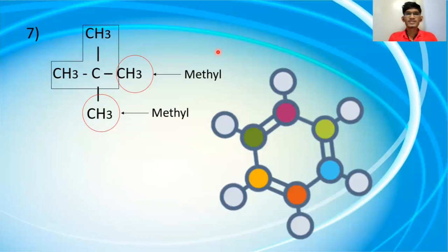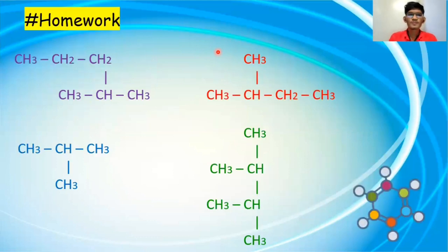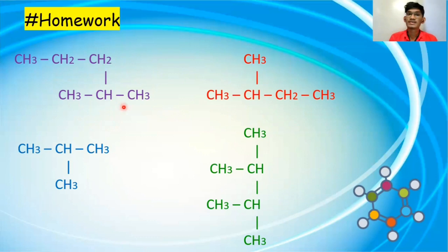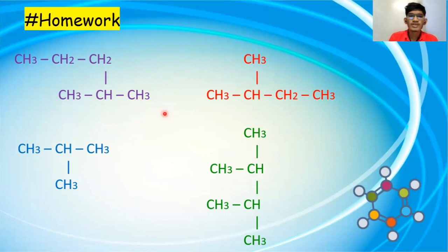We are done with the session. This is the homework part. I'll give you a hint: the first homework question is CH3–CH2–CH2–CH–CH3 with CH3 branching. Count the terminal points: 1, 2, 3 — so it is a branch chain. For the second homework question, count the terminal points: 1, 2, 3, 4 — again a branch chain. The rest you have to do by yourself.